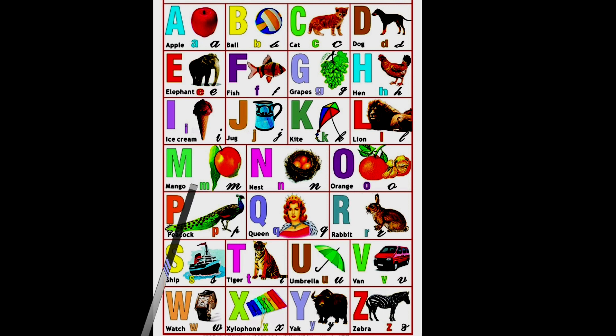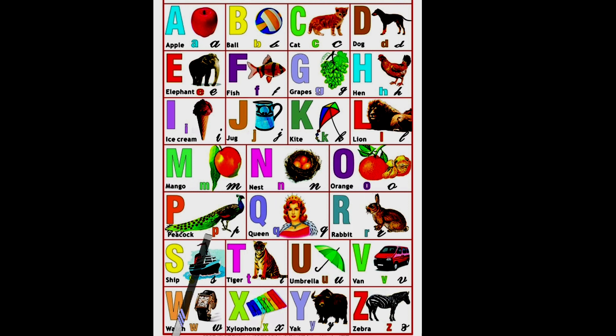M for mango, N for nest, O for orange, P for peacock, Q for queen, R for rabbit.